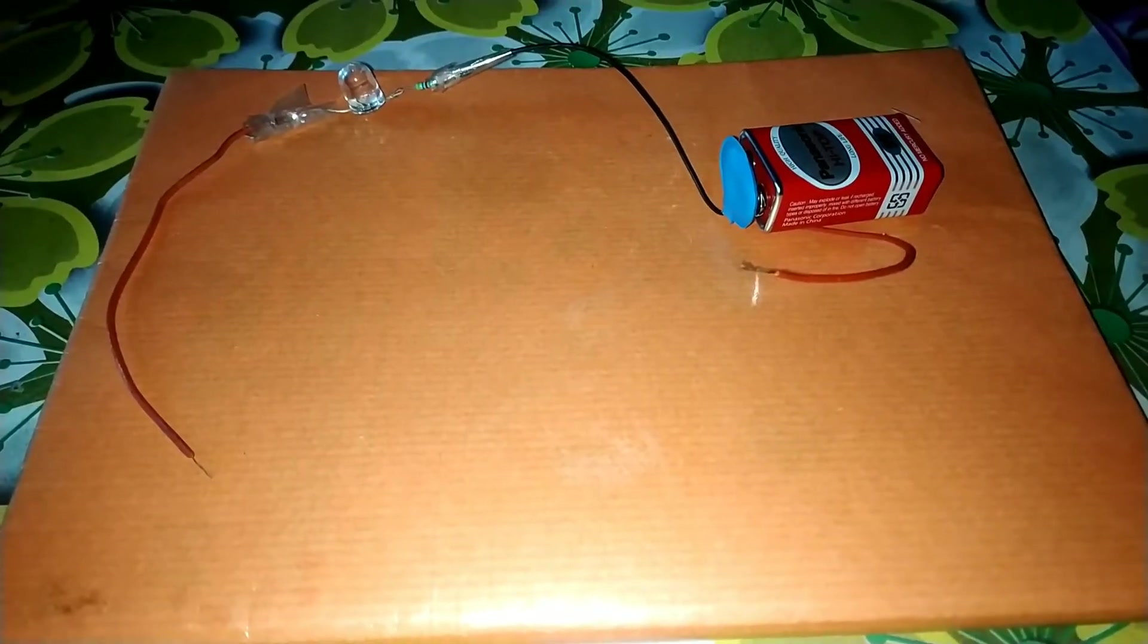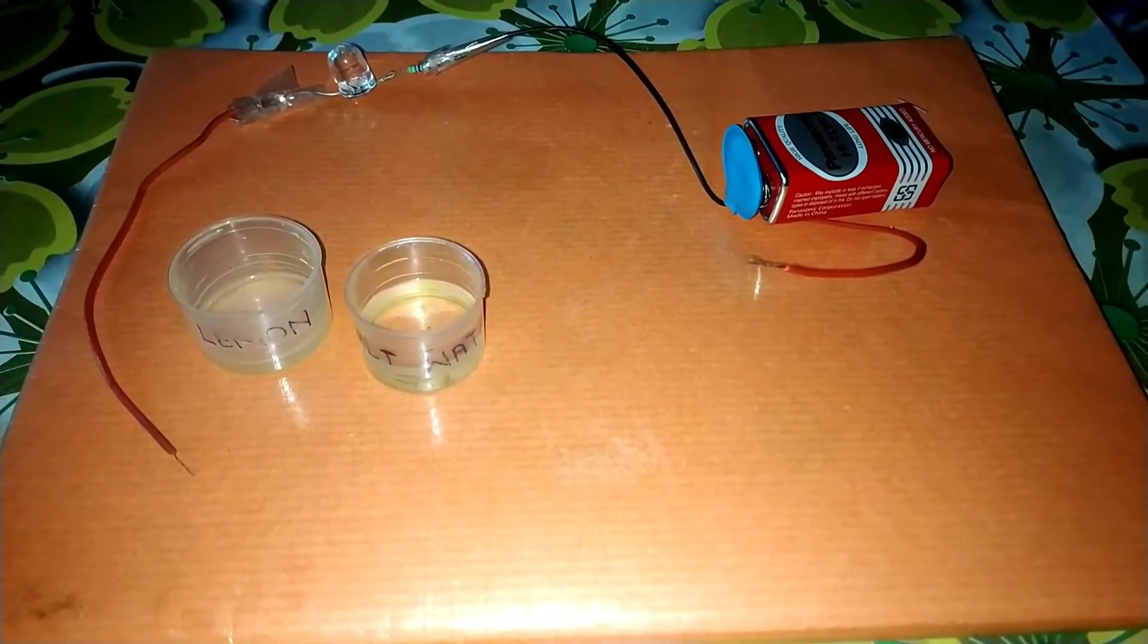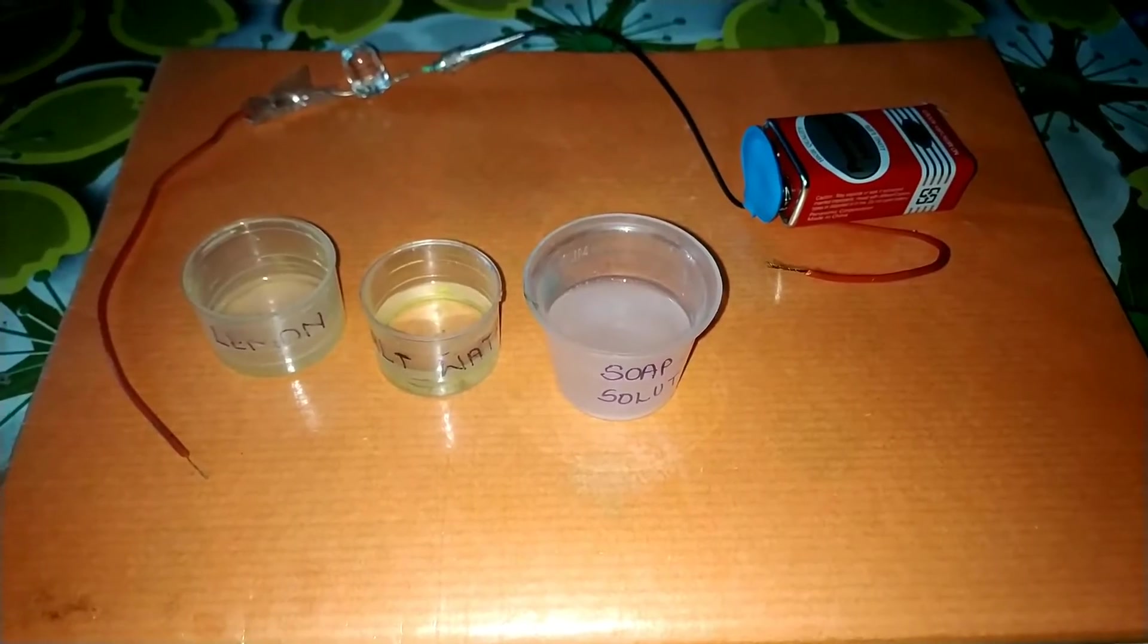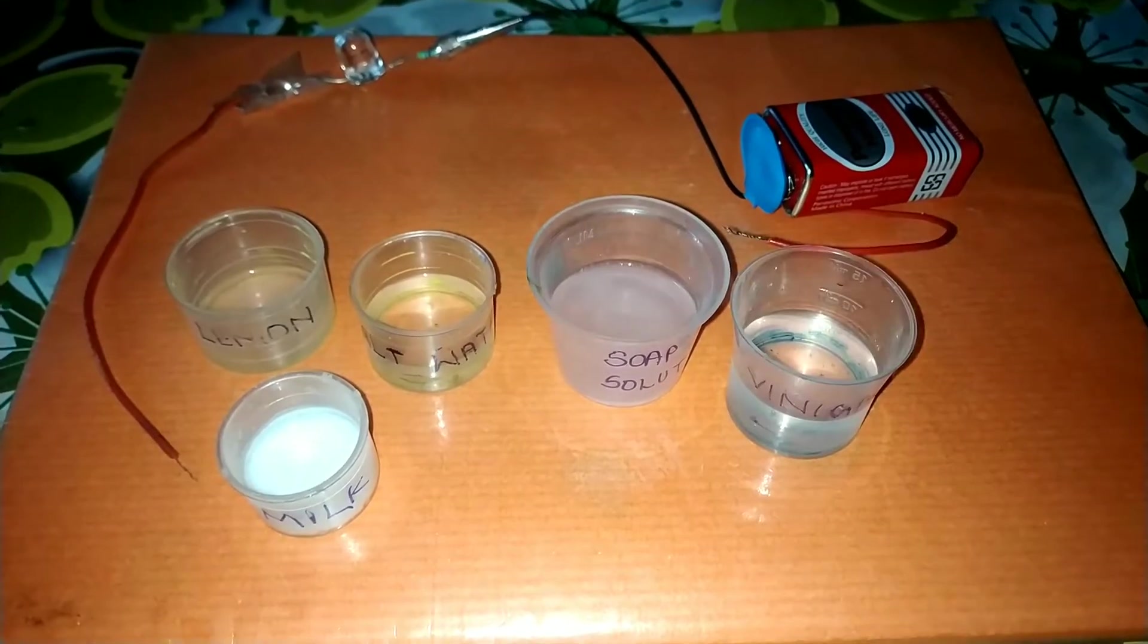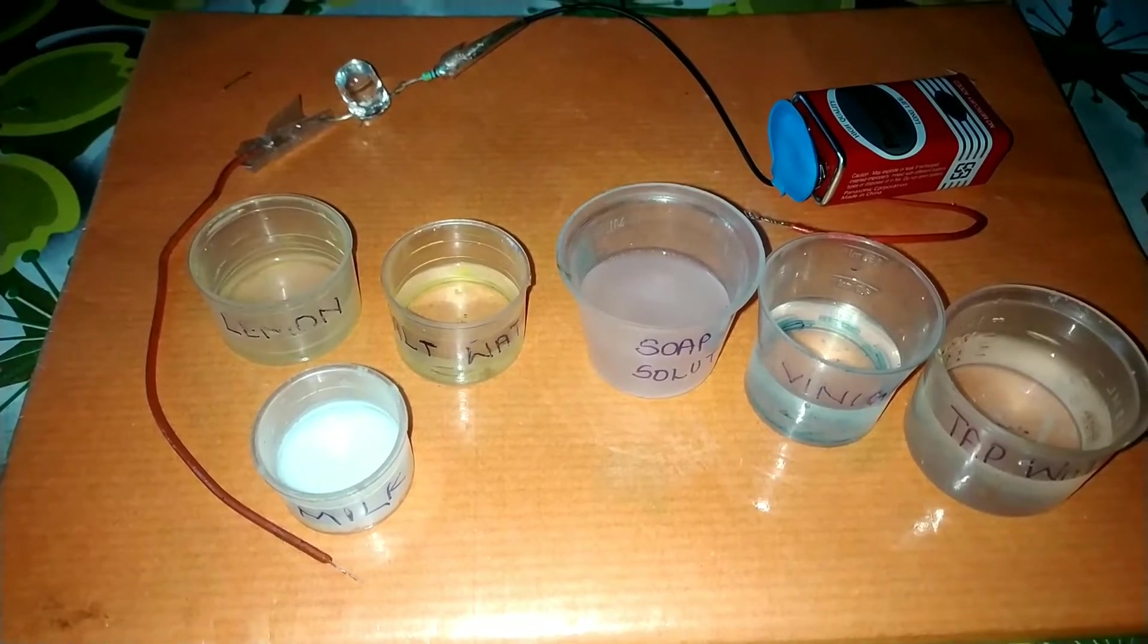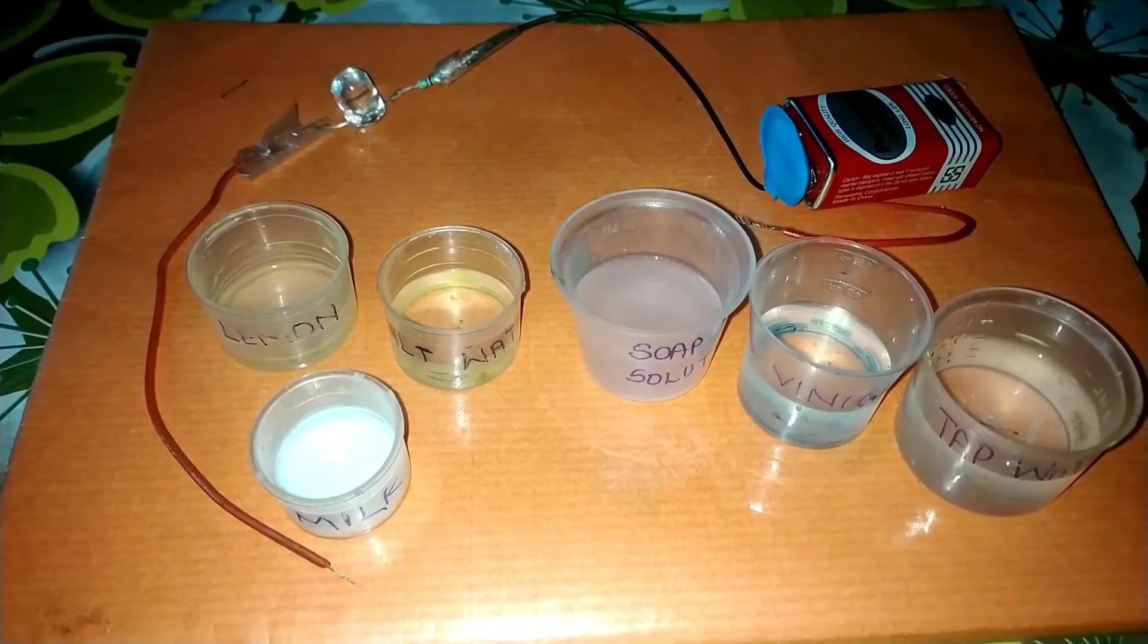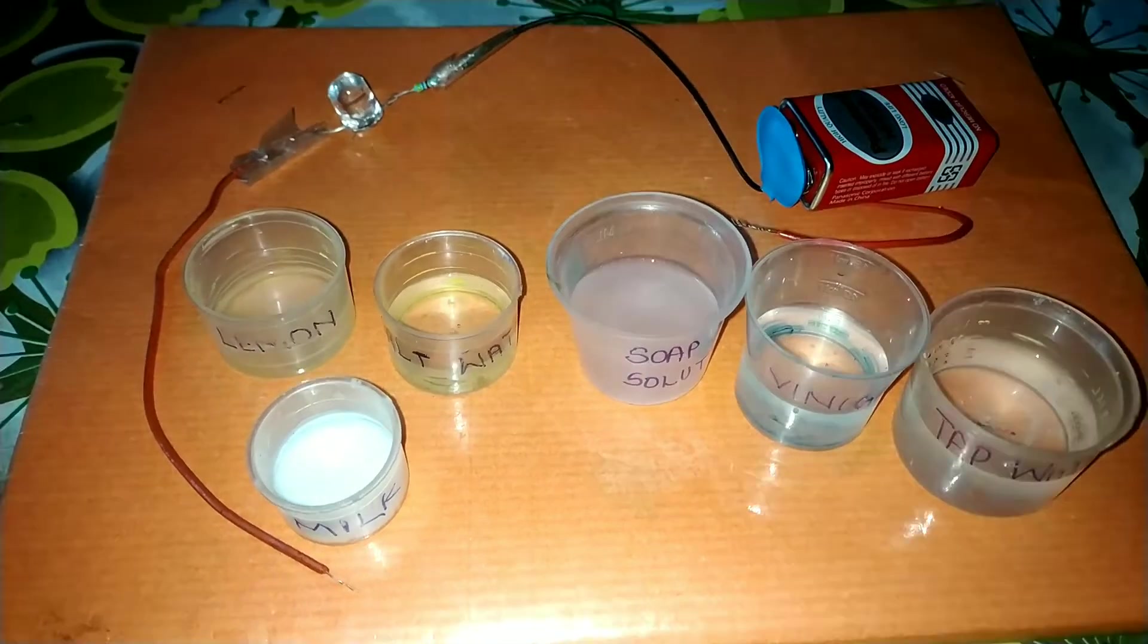We will observe that the bulb glows with lemon juice, salt water, soap solution, milk, vinegar and tap water, because lemon juice, salt water, soap solution, vinegar, tap water and milk contain ions.